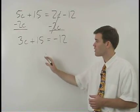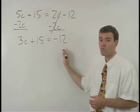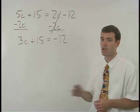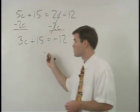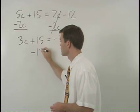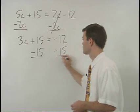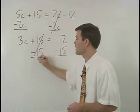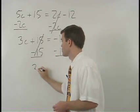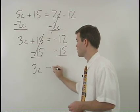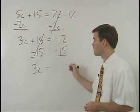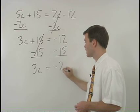Now we want to put our numbers together on the right side of the equation, and we do that by subtracting 15 from both sides. On the left we have 3c, and on the right, negative 12 minus 15 is negative 27.